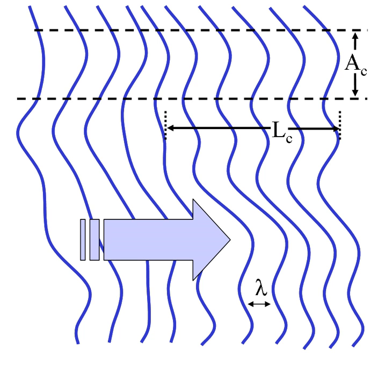Interference is the addition, in the mathematical sense, of wave functions. A single wave can interfere with itself, but this is still an addition of two waves.